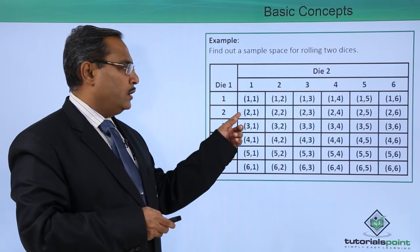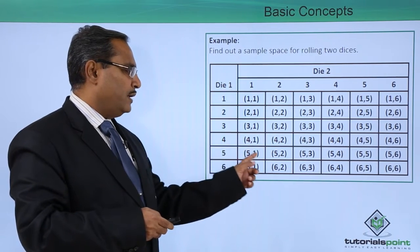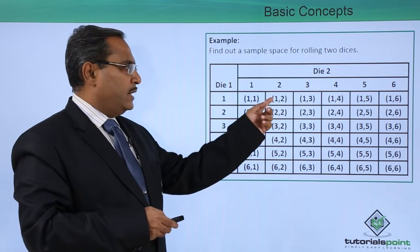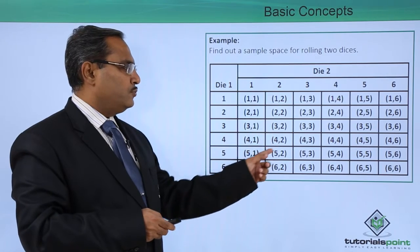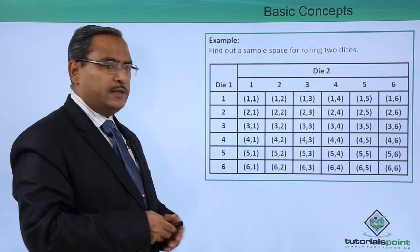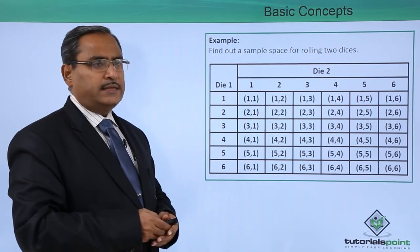Here we are having (1,1), (1,2), (1,3), (1,4), (1,5), (1,6), that means considering these values. Then we are having (2,1), (2,2), (2,3), (2,4), (2,5), (2,6). In this way, here we are having respectively 36 different values in the sample space.